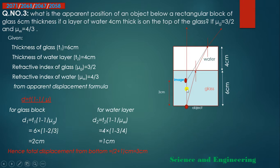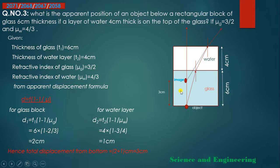For a two-medium problem, calculate the individual apparent displacement for each medium separately, then add them together to get the total apparent displacement from the bottom.